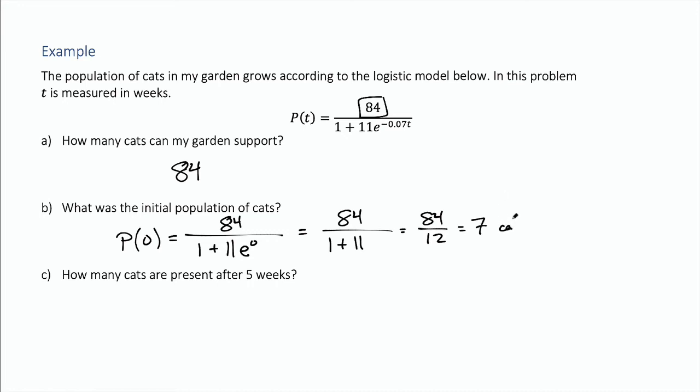There are 7 cats that started off in my garden and now I'd like to know how many cats are present after 5 weeks. Well t is measured in weeks so this just means t is 5, P(5). This is 84 over 1 plus 11 times e to the negative 0.07 times 5.